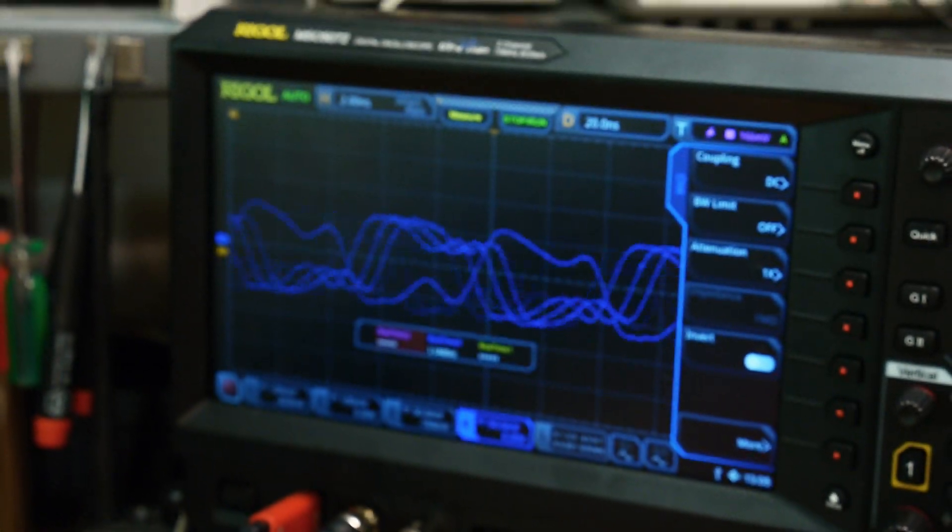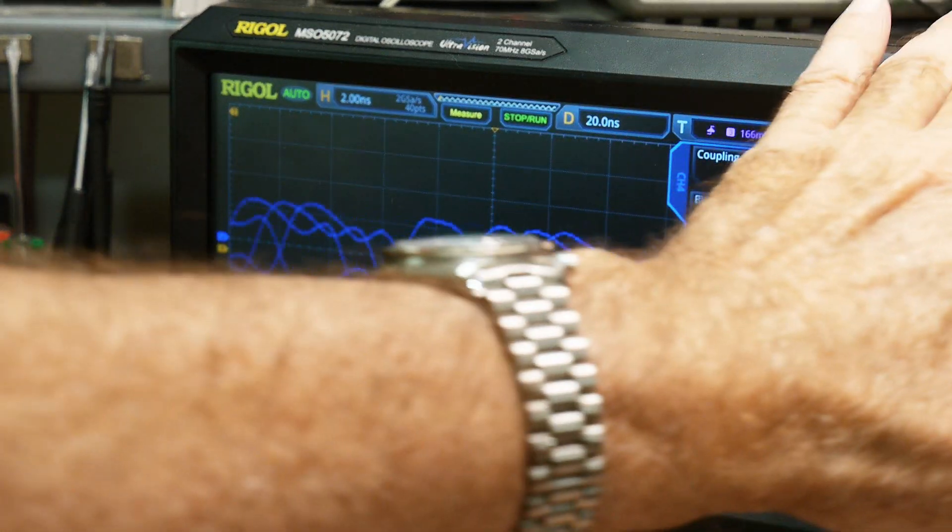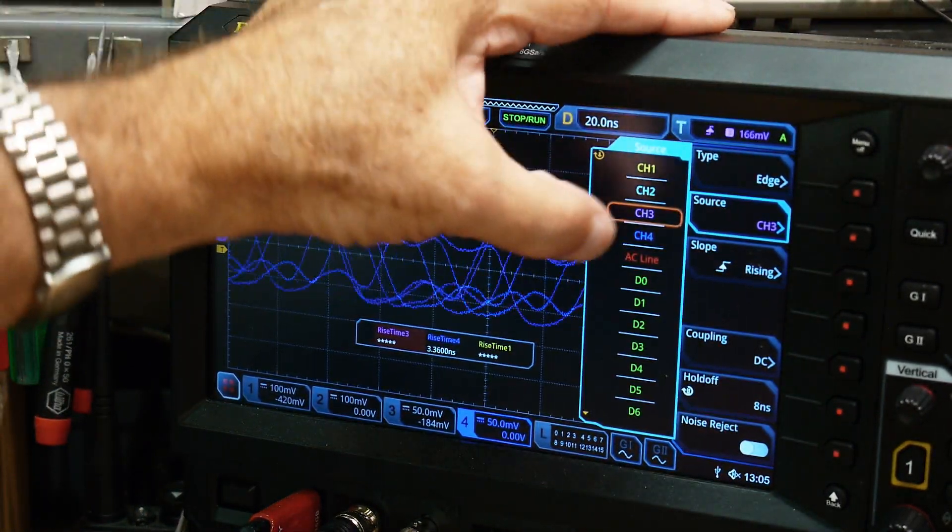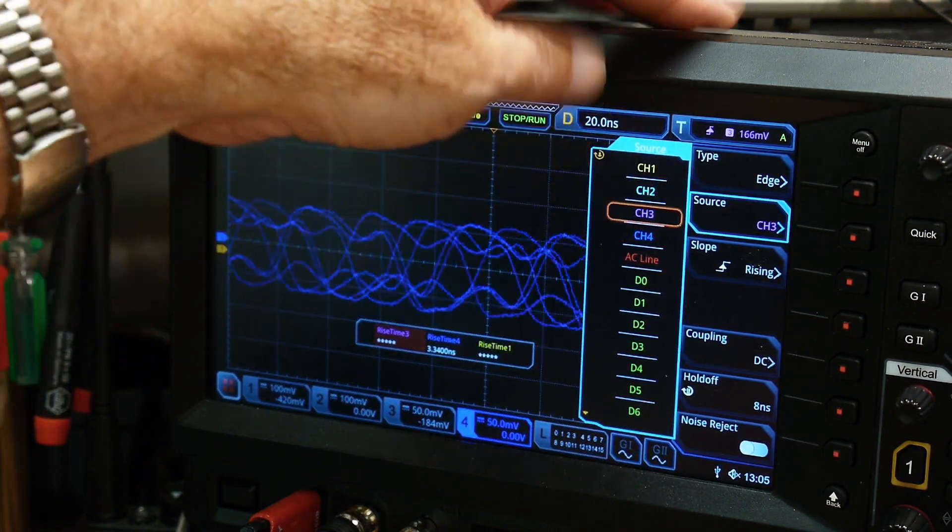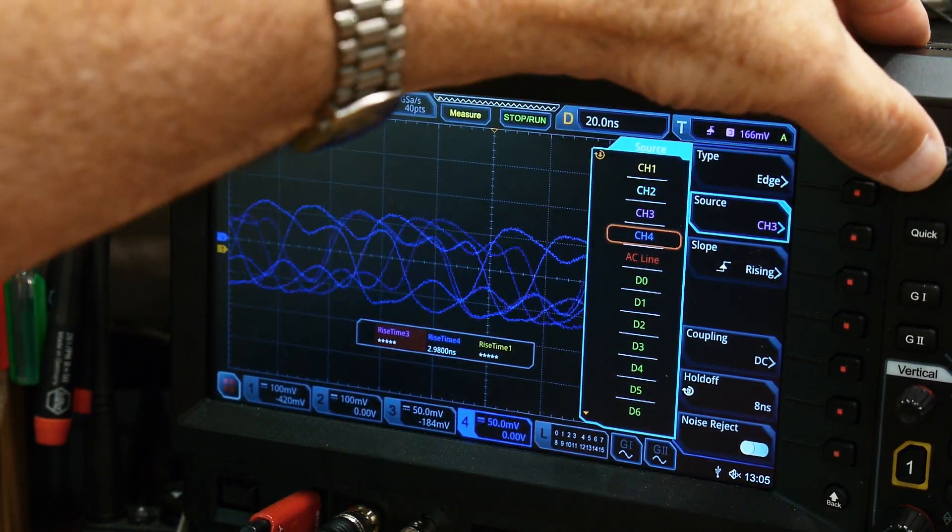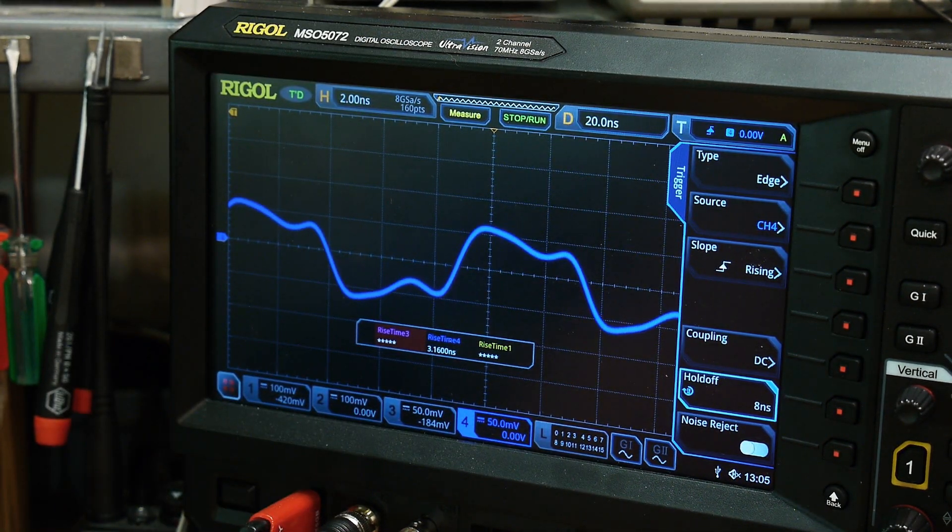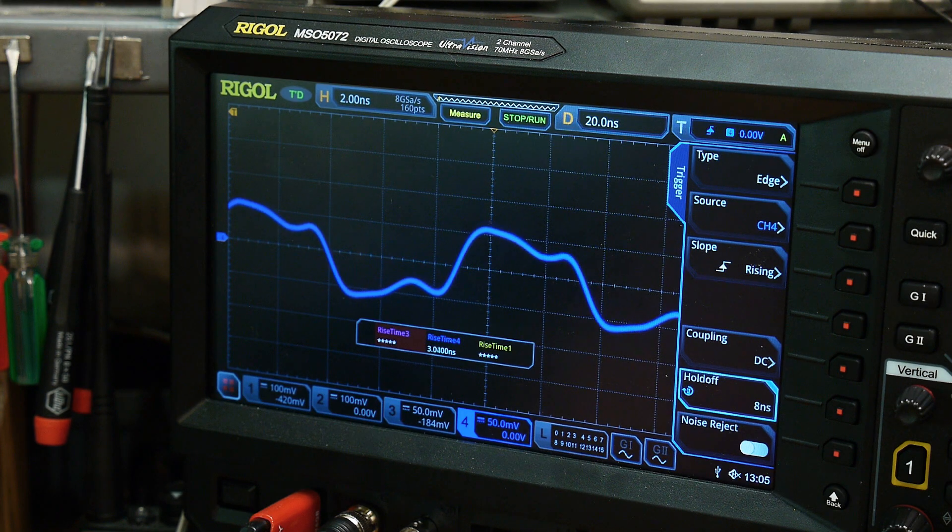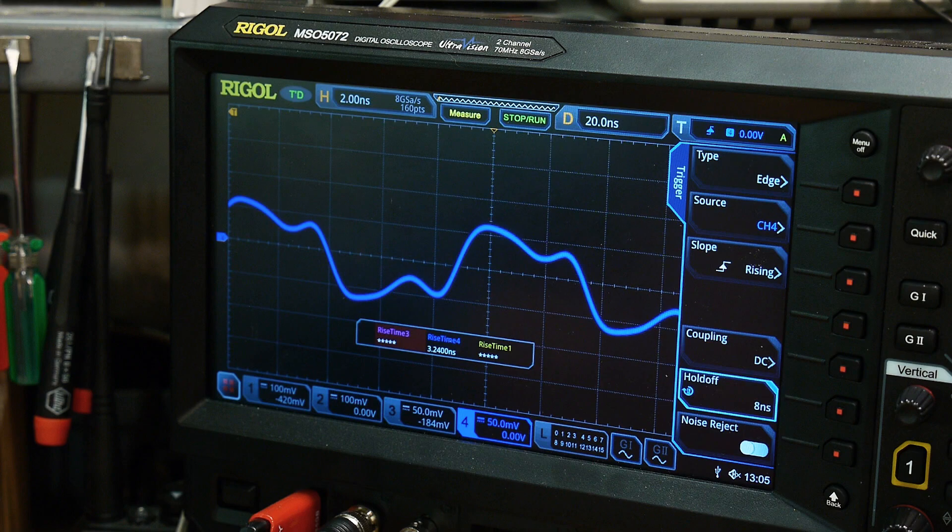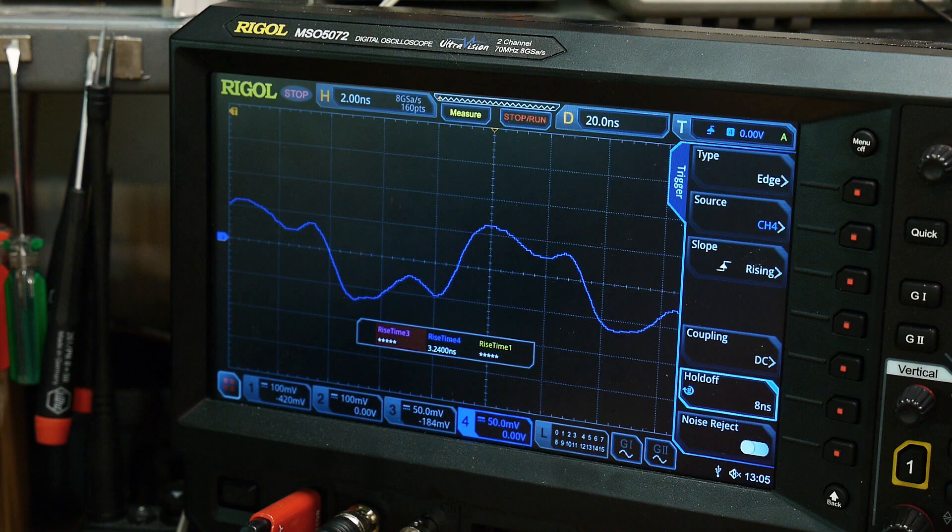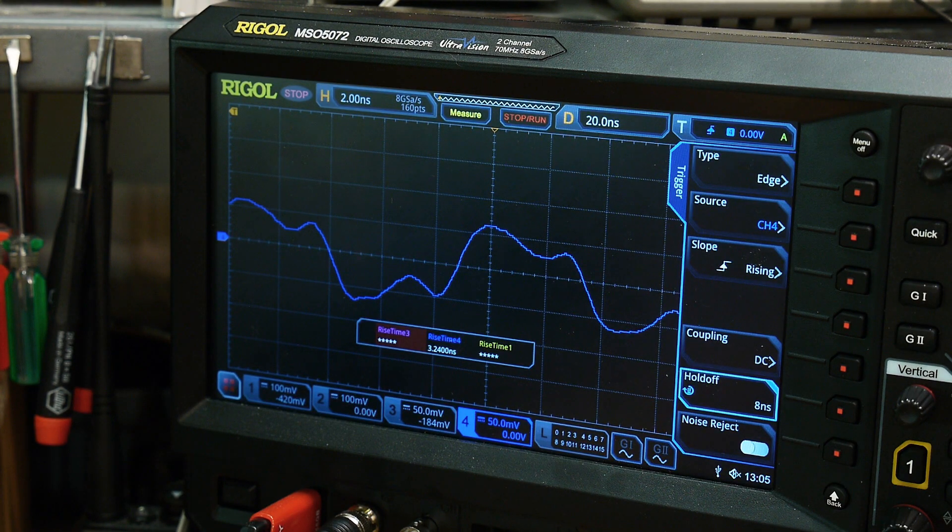And we have a signal here. I need to trigger on channel four. There we go. And you can see it's got a little bit of ground bounce. I ended up moving the little yellow ground wire. Yeah see, it needs a short ground. But we can do a single sweep of that one too. Yeah, it's a little bit uglier. You get what you pay for, but it does work.